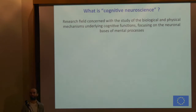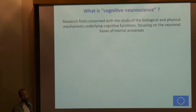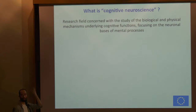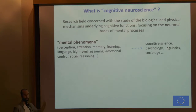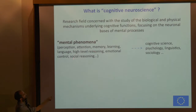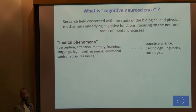What is cognitive neuroscience? I'm always surprised when people ask me why I'm studying cognitive neuroscience as a computer scientist. Cognitive neuroscience is a field concerned with the study of the biological and physical mechanisms which underlie the mind and cognitive functions — in particular, focusing on neural processes. On one side of the bridge we have mental phenomena like perception, attention, high-level reasoning, language, and emotional control — things usually studied by psychology, linguistics, sociology, and anthropology — abstract things.